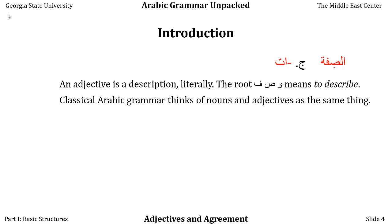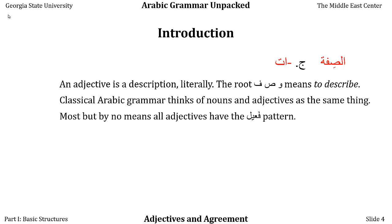Classical Arabic grammar thinks of nouns and adjectives as being essentially interchangeable — the same part of speech. Modern Arabic grammar tends to work a little bit more like English does.